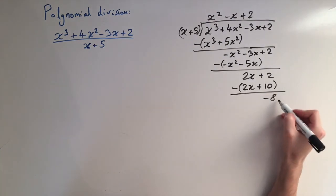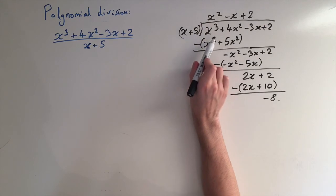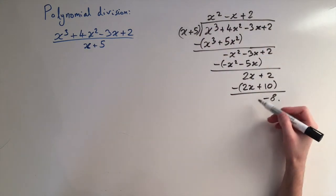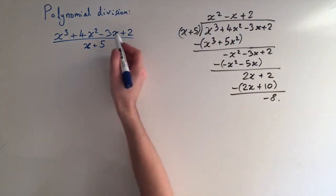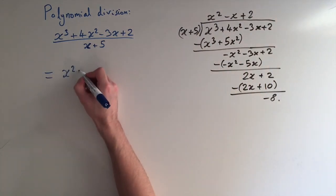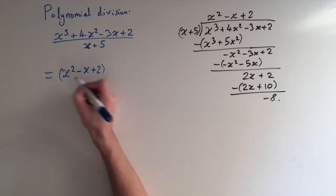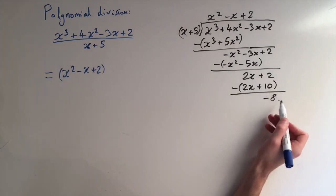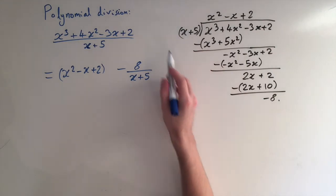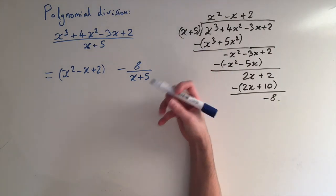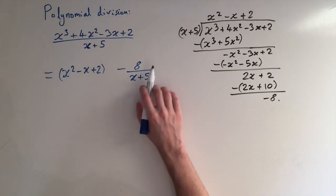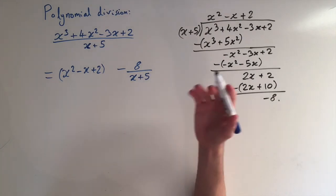This is important because it tells us that x plus 5 is not a factor of this cubic — we can't write this as x plus 5 times a quadratic because we've got a constant left over. To interpret this: this divides wholly into it, giving us the quadratic x squared minus x plus 2, but we also have this remainder which doesn't divide in, so we have minus 8 divided by x plus 5. This is like the whole part — the integer part — and this is the fractional leftover bit.